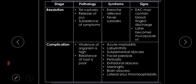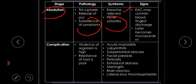In the stage of resolution, when the tympanic membrane ruptures, release of pus occurs and symptoms subside. The earache is relieved and fever subsides. Signs include external auditory canal discharge that is initially blood-tinged and later becomes mucopurulent. If resolution does not occur, a stage of complications can follow, depending on the virulence of the organism and the resistance of the host.